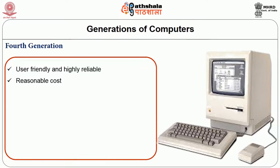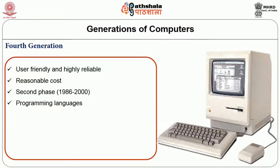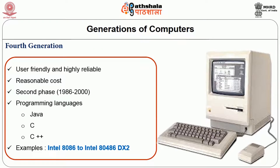The second phase of fourth generation was between 1986 and 2000. This is the age in which various programming languages like Java, C++, etc., evolved along with computer networks. Intel 8086 to 80486 DX2 are examples of fourth generation computers.